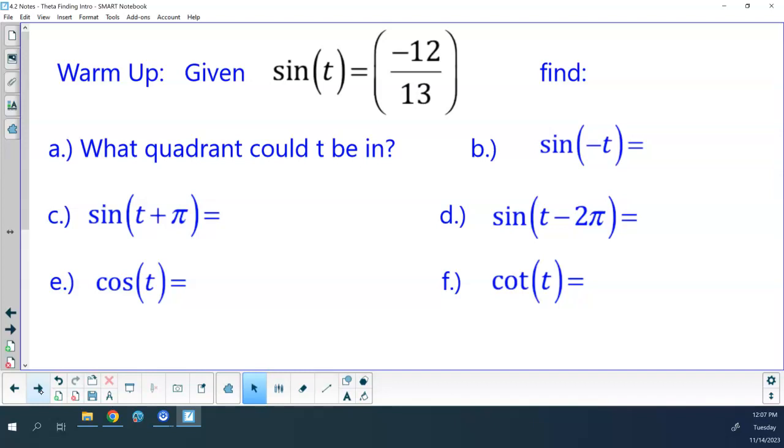Here we go. So, given the fact that the sine of t is negative 12 thirteenths, I want you to find me the following six things. One, I want you to find me what quadrant t could possibly be in. Two, I want you to find me what the sine of negative t is. Three, I want you to find me what the sine of t plus pi is. Four, I want you to find me what the sine of t minus two pi is. Five, I want you to find me what the cosine of t is. And six, I want you to find me what the cotangent of t is.